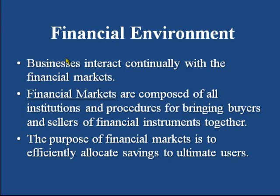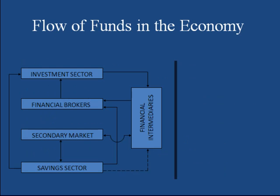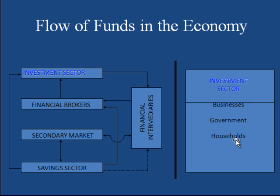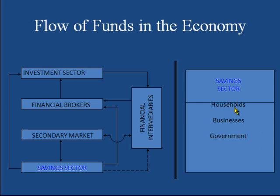Now let's talk about the financial environment. Businesses interact continually with financial markets. Financial markets are composed of all institutions and procedures for bringing buyers and sellers of financial instruments together, and their purpose is to efficiently allocate savings to ultimate users. In this presentation from the book Fundamentals of Financial Management, 12th edition by Van Horn, there is a flow of funds from the savings sector to the investment sector. The investment sector includes businesses, government, and households, and the savings sector also includes households, businesses, and government.